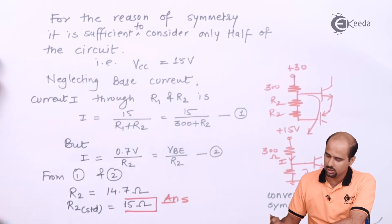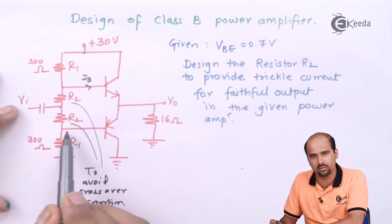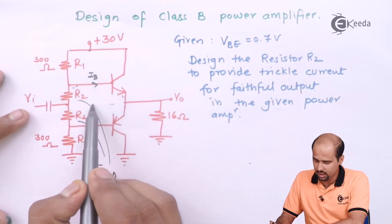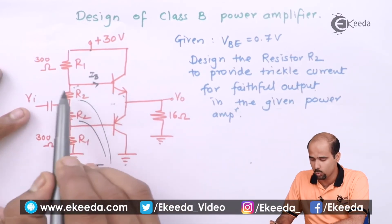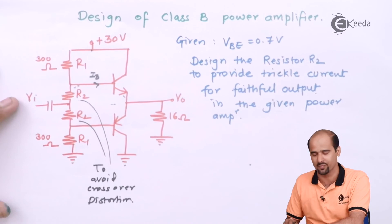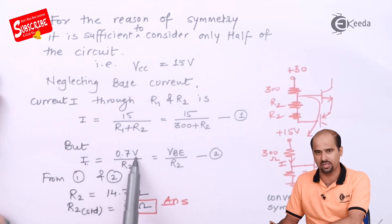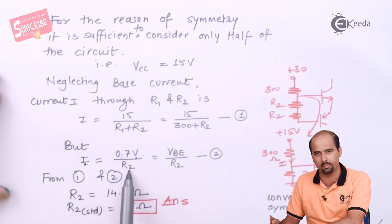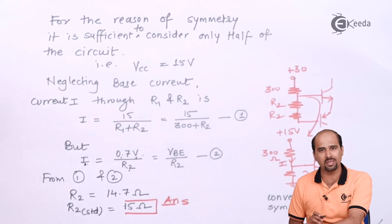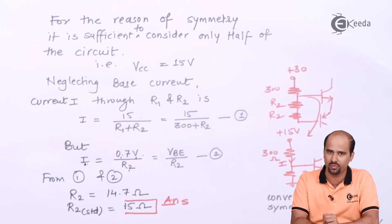From the circuit, I also know that I = 0.7 volts / R2. Because whatever current flows through R2, the voltage developed across R2 is nothing but V_BE, which is 0.7 volts. So from equation one: I = 15 / (R1 + R2), and from equation two: I = 0.7 / R2. I will equate these two equations and from that I will get the value of R2 as 14.7 ohm.